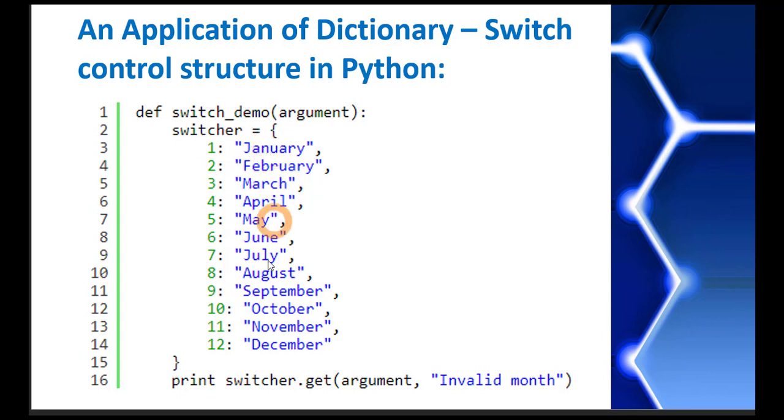Now we have a function in the dictionary which is called get. So we can write the name of the dictionary, which is switcher in this case, switcher dot get. Then this function takes two arguments. The first argument is actually a key.